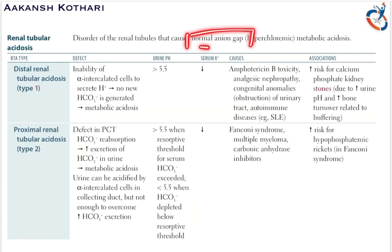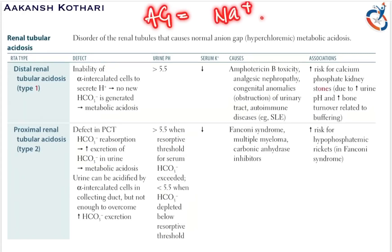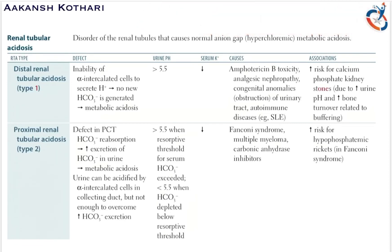The anionic gap is calculated by the sodium concentration minus the chloride concentration plus bicarbonate concentration. When the anionic gap during a situation of metabolic acidosis is in the normal range — that is from 8 to 12 — it is a normal anionic gap metabolic acidosis, which is often associated with a hyperchloremic state.